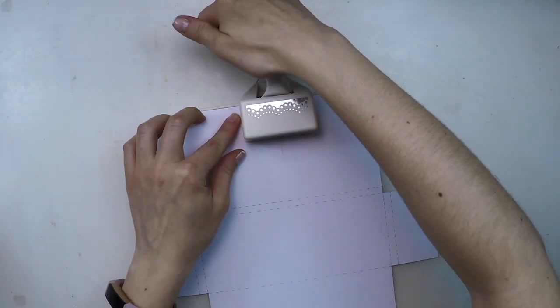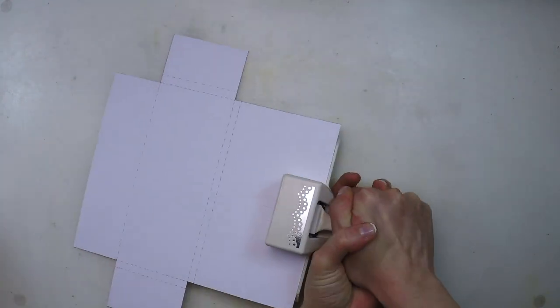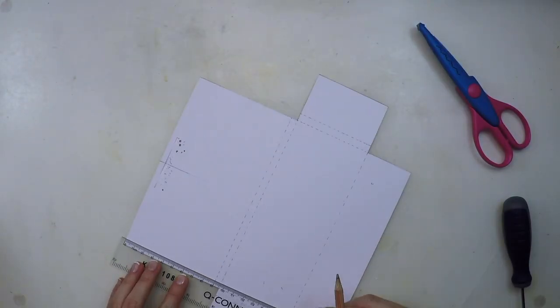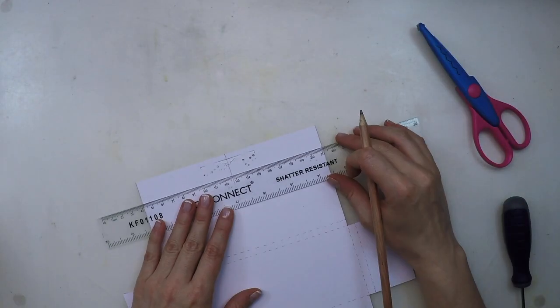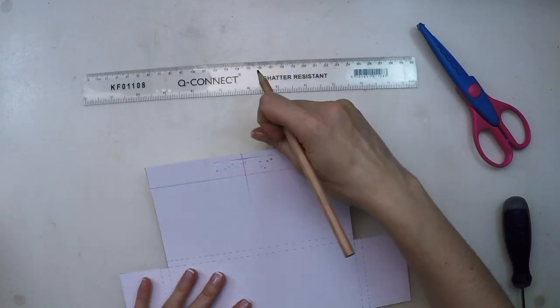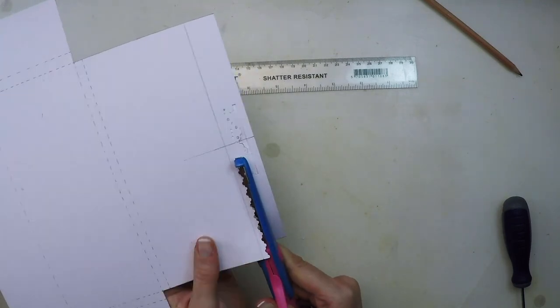Now we are going to decorate the pocket. My initial idea was to use that punch by Martha Stewart but the paper was too thick because I'm using heavy cardstock by PaperArtsy. Since that was too thick I decided to actually go and use some of those scissors that create borders and that worked fine.